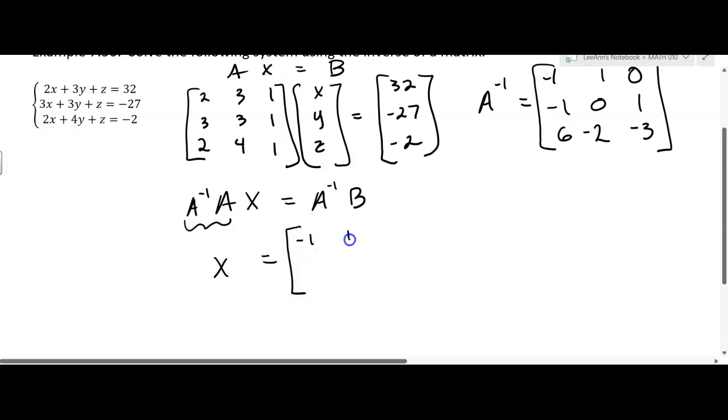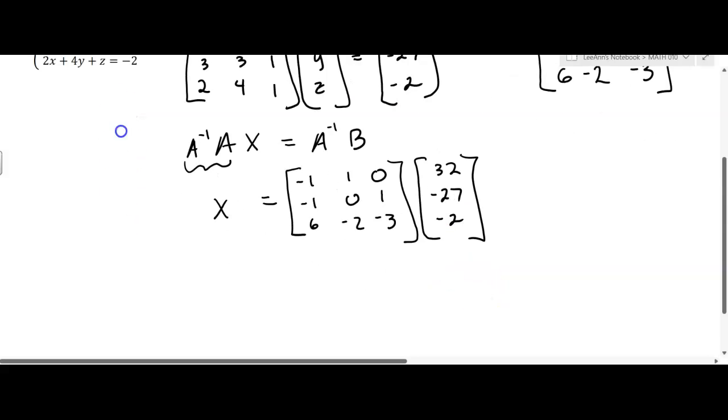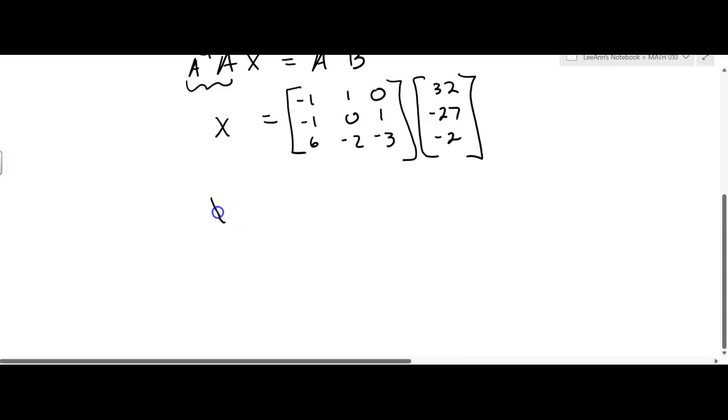It's coming in, negative 1, 1, 0, negative 1, 0, 1, 6, negative 2, negative 3. And we're going to be multiplying that times 32, minus 27, minus 2. So we're using matrix multiplication here to solve this. So we're going to get the X matrix, the variable matrix...